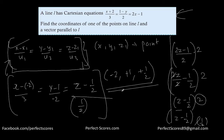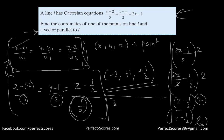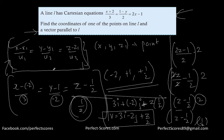Now, find a vector parallel to L. Any vector parallel to L should have the same u1, u2, and u3. So u1 is 3, meaning the vector has 3i; u2 is −2, meaning it has −2j; and u3 is 1/2, meaning it has (1/2)k. So the vector 3i minus 2j plus (1/2)k is parallel to this line, because it has the same u1, u2, and u3.